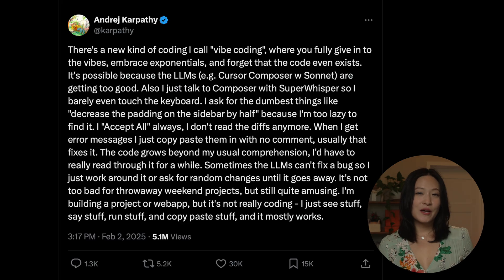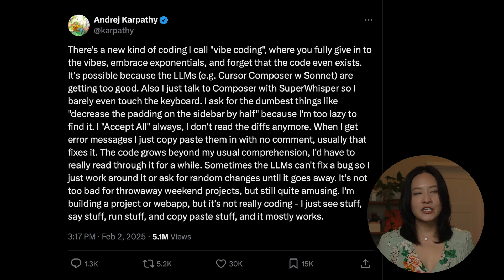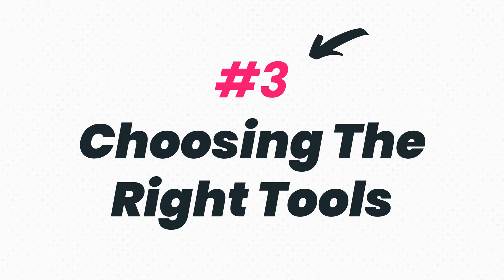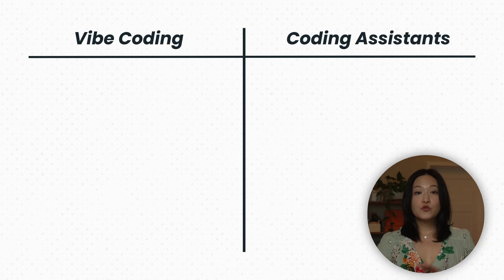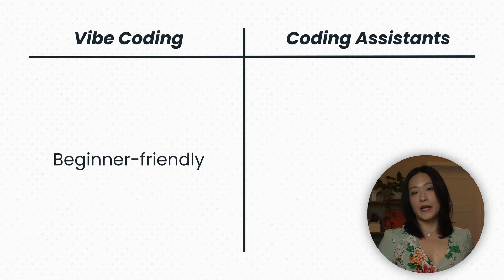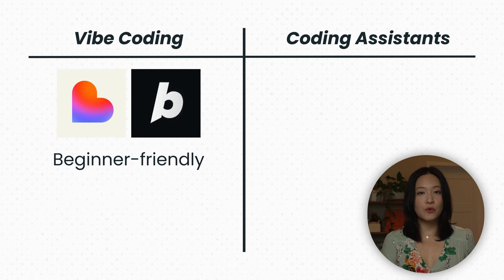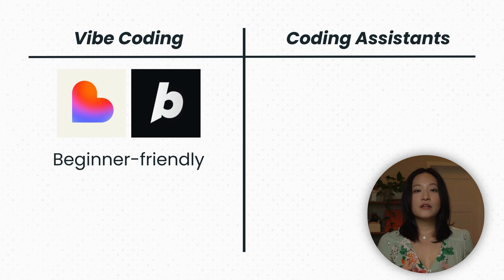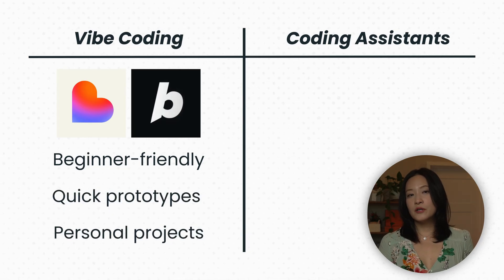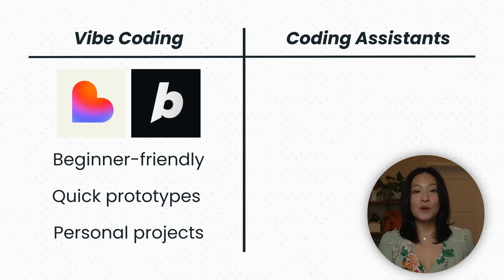There's also a new type of building called vibe coding, a term coined by Andrej Karpathy. He describes it as a state where you fully give in to the vibes, embrace exponentials, and forget that code even exists. There are many tools you can use to literally build apps in minutes just by describing what you want. These fall into two main categories. If you have no technical background, you can go with no-code tools like Lovable or Bolt — you describe what you want at a high level and they build it for you. But if your goal is to build a more complex professional app for millions of users, you may hit some limits.